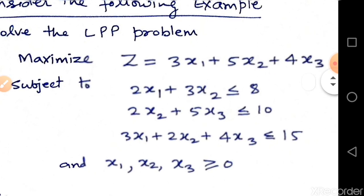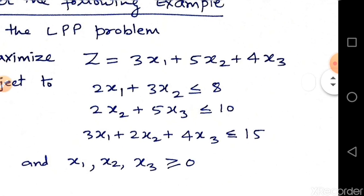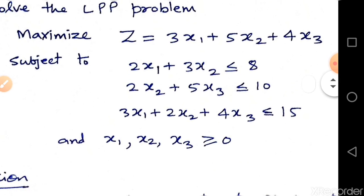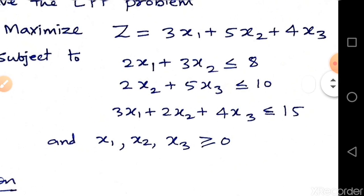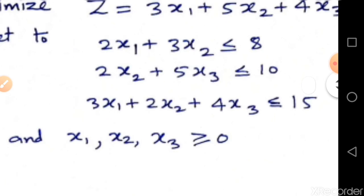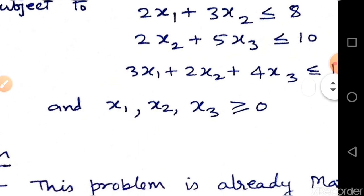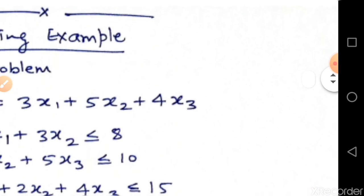Maximize Z equals 3x1 plus 5x2 plus 4x3, subject to constraints: 2x1 plus 3x2 less than or equal to 8; 2x2 plus 5x3 less than or equal to 10; 3x1 plus 2x2 plus 4x3 less than or equal to 15; and variables x1, x2, x3 greater than or equal to 0.